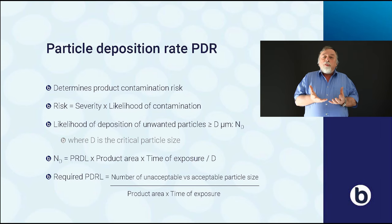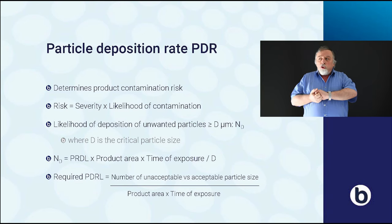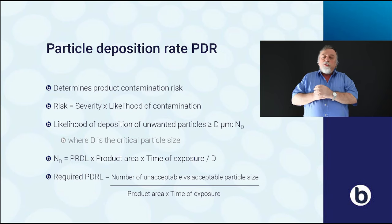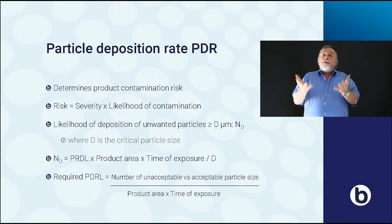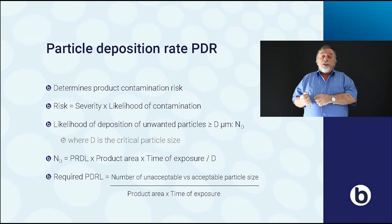Products can be contaminated by particles through deposition, so the particle deposition rate determines the risk of product contamination. Risk is severity times the likelihood of contamination — severity could be high if particles are large and lower when particles are small. The likelihood of particles depositing onto a product is related to the product area and the time the product is exposed. The number of particles larger than d equals the particle deposition rate level times the product area times the time of exposure, divided by the critical particle size d.